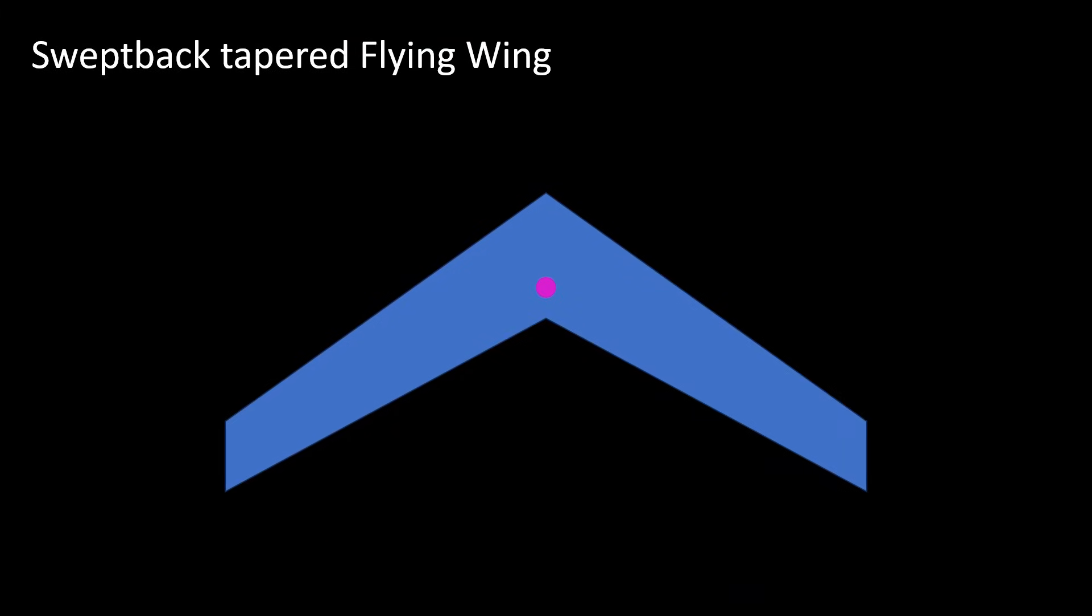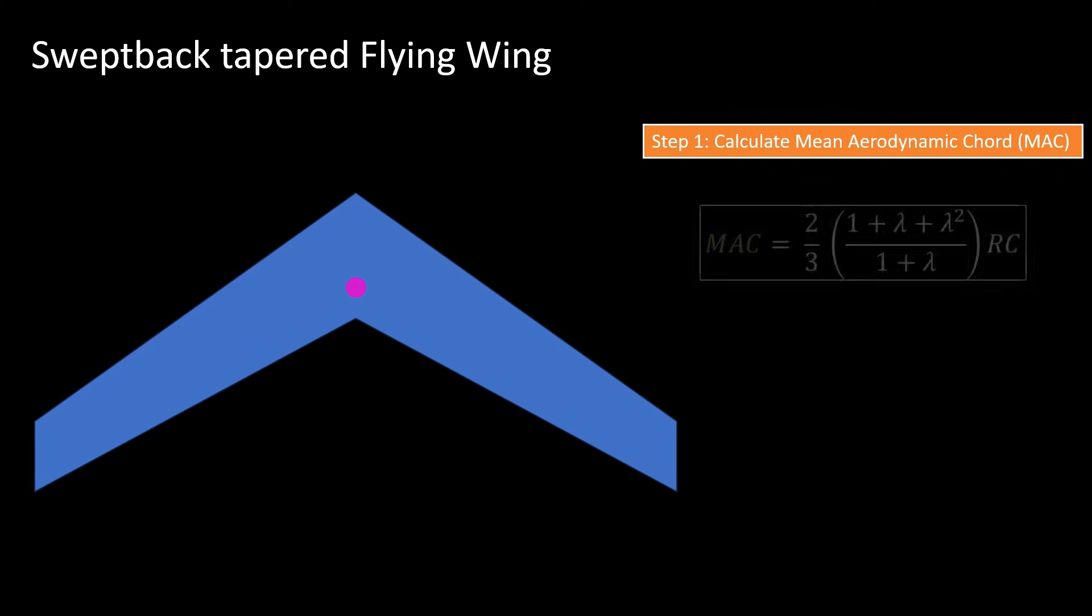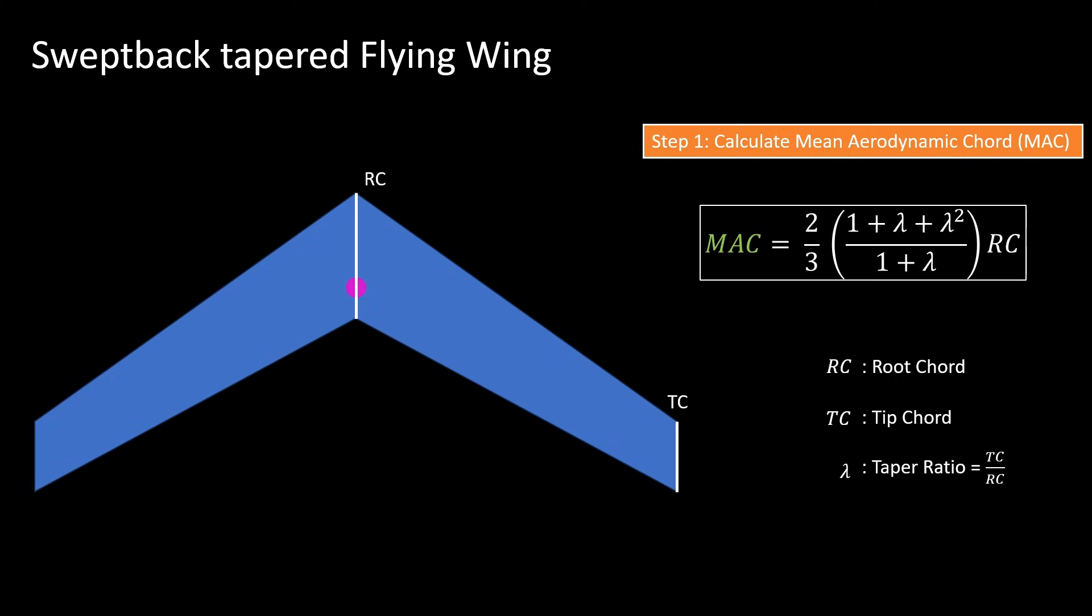In case of swept-back tapered wings, the neutral point can be estimated as follows. First, calculate the mean aerodynamic cord by using this formula. Here, RC is the root cord, TC is the tip cord, and lambda is the taper ratio, defined as tip cord over root cord.